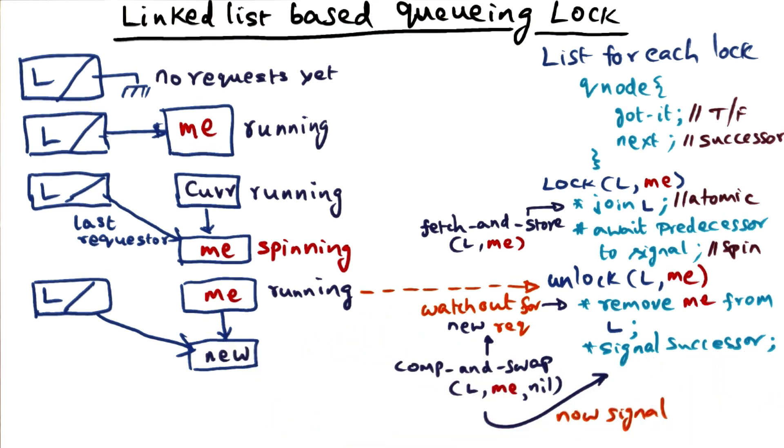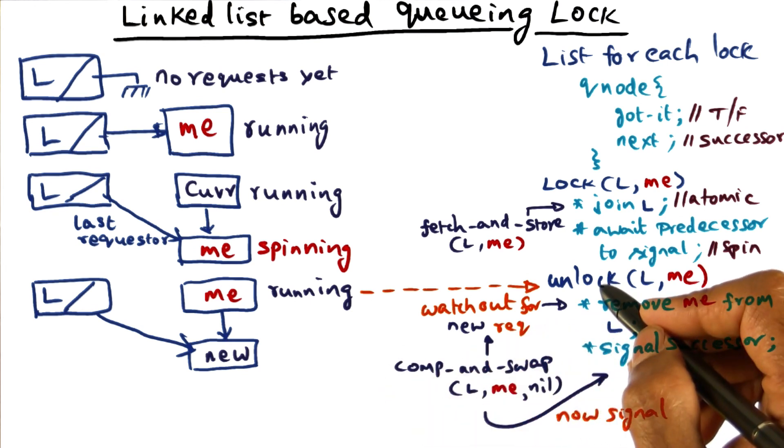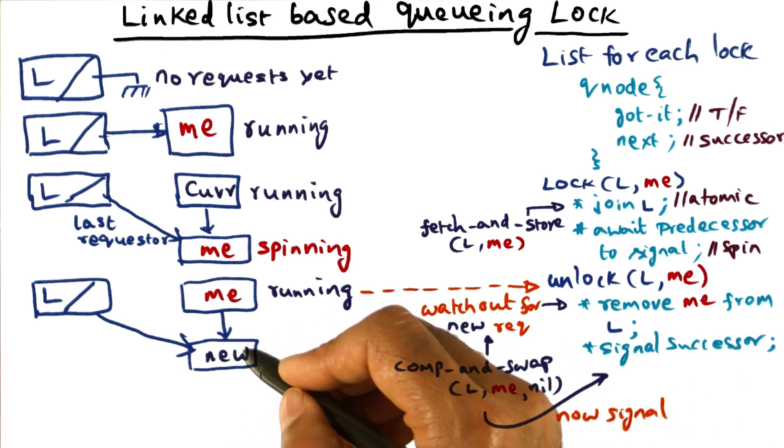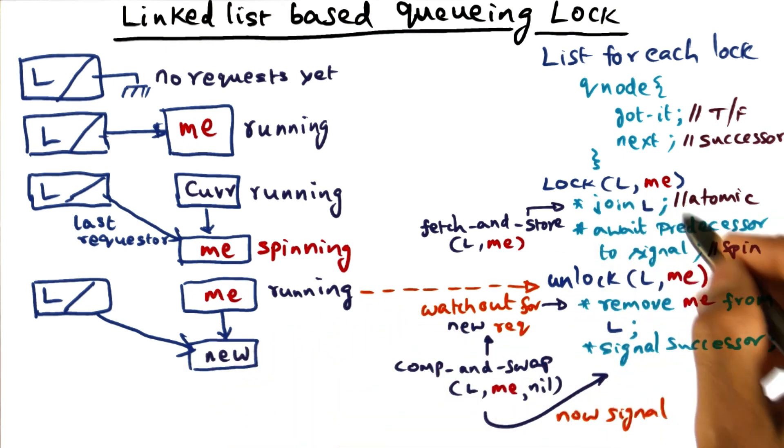So that's how I can make sure that when we unlock, the corner case that occurs during unlock - that is, there are no requesters after me - I can take care of that by doing this atomic operation and ensuring that there is no race condition between me, the unlocker, and a new requester that is in the process of forming through this lock call.